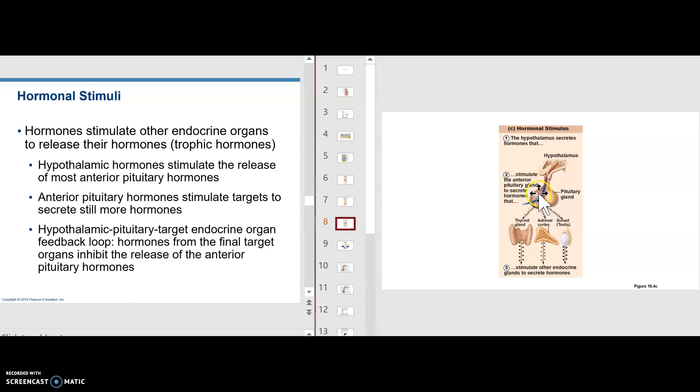Adrenal corticotropic hormone from here. Trophic, see, adrenal cortic, would turn on the adrenal cortex. The medulla we talked about already. In other words, anterior pituitary hormones stimulate target tissues to secrete still more hormones called trophic hormones.